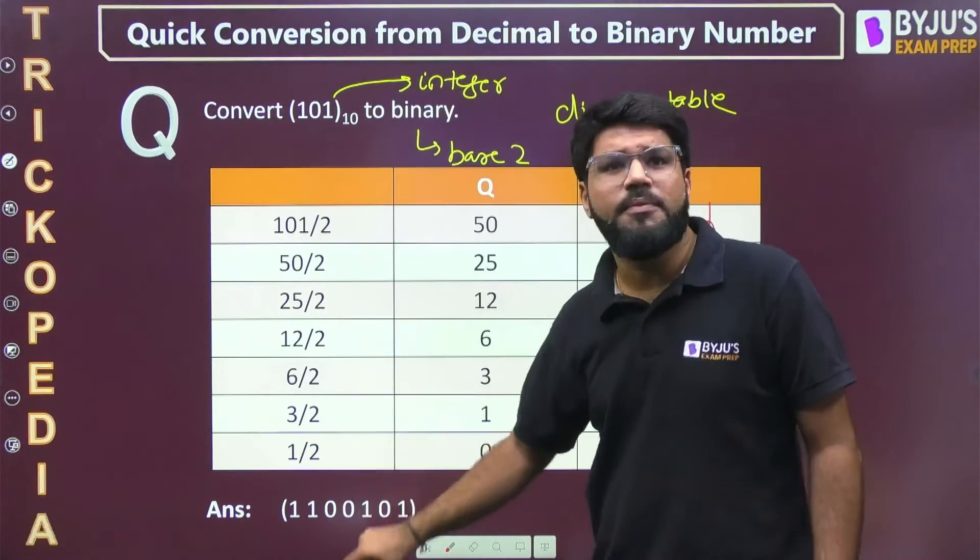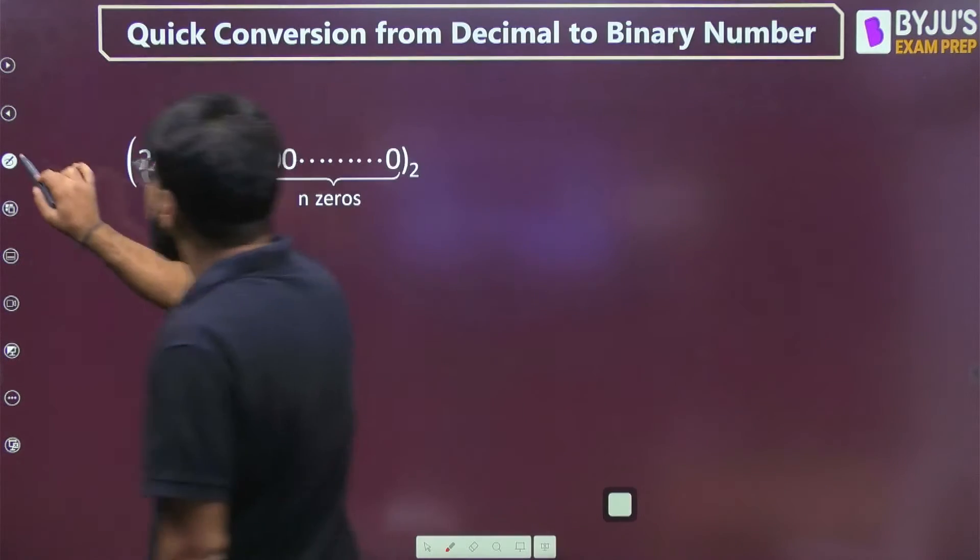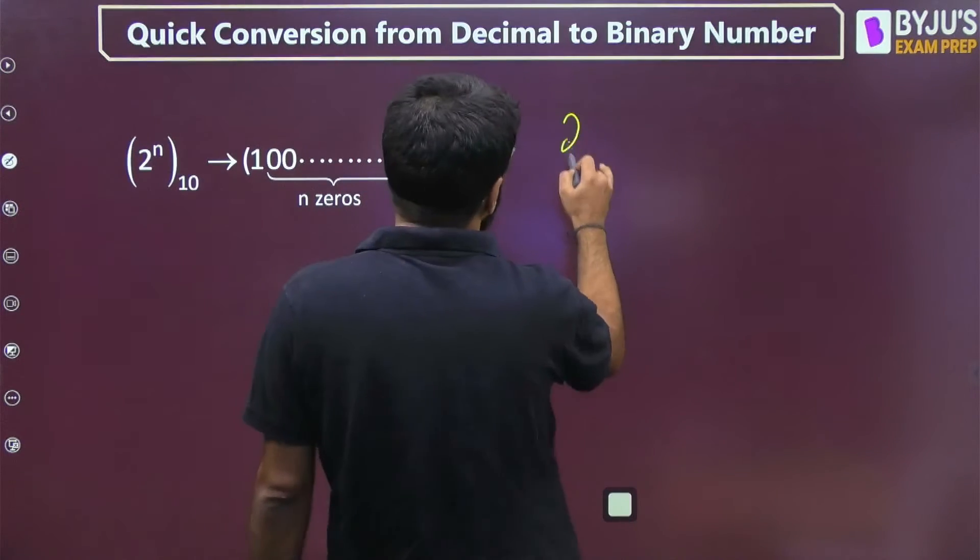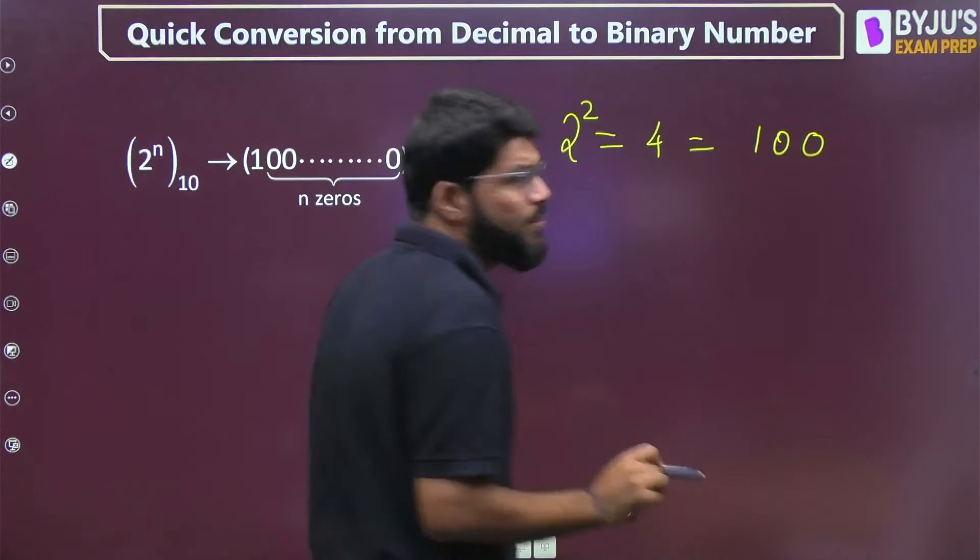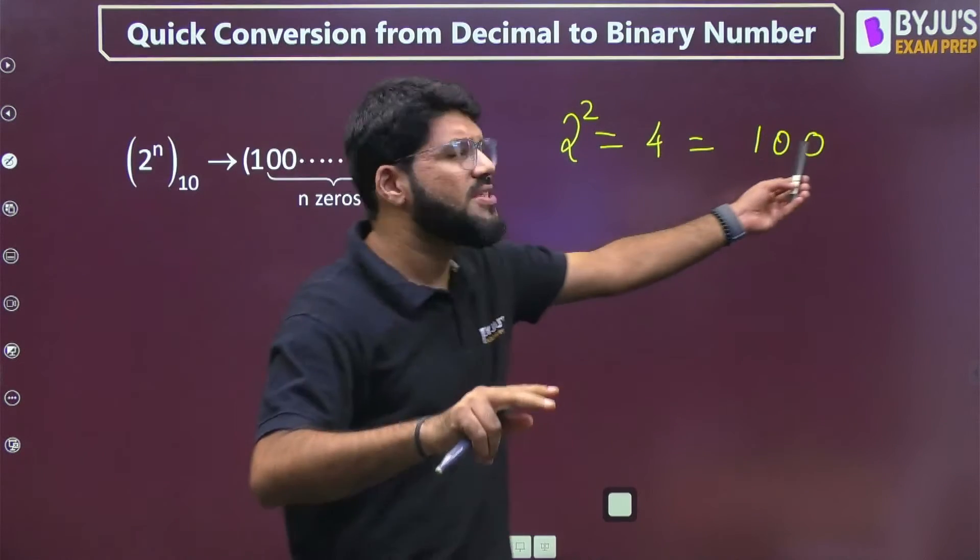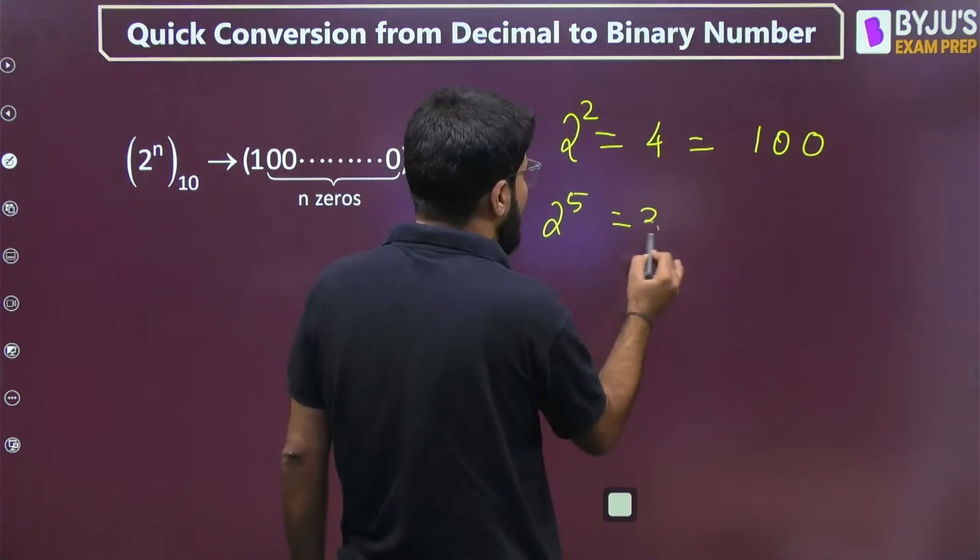Now let's make it faster. If I take bigger and bigger numbers, the table will be even larger and take a lot of time. You have to understand one pattern here. If I tell you 2 power 2 is 4, the conversion of 4 is 100, which contains 2 zeros at the end. 2 power 5 is 32, which when converted to binary is 1 followed by 5 zeros.